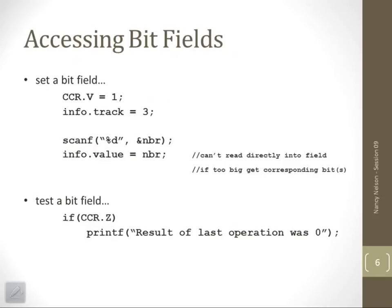Now let's look at what we can do. Let's say we want to set a bit field. For some reason we want to set the overflow bit in the condition code register. Our variable name was CCR. We use the field operator, which is a dot, and then the name of the bit field. Here we can say that field is 1.